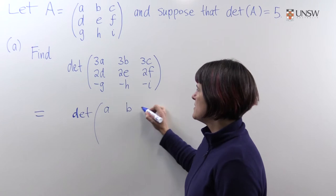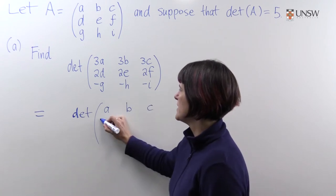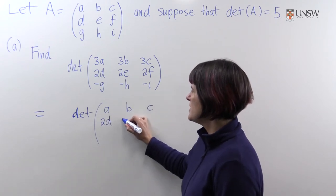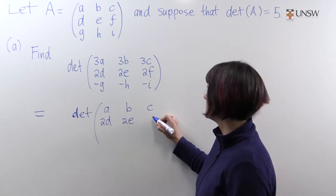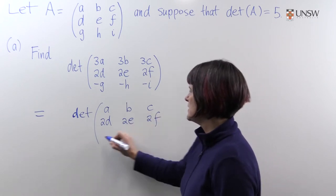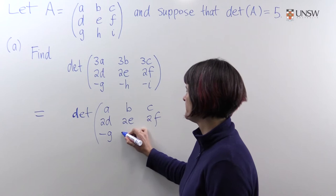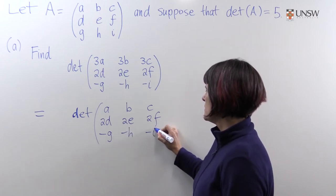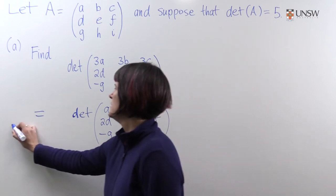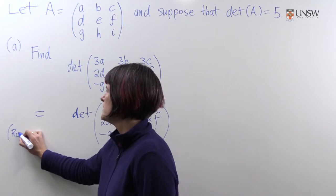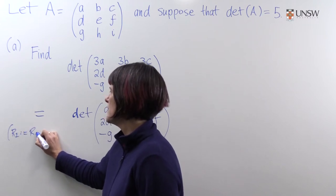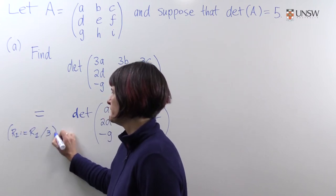So I'm going to just write down the matrix we would get after dividing the first row by three, and then we'll have to fix the determinant. So we obtain this. The operation that we've done here is row one becomes row one divided by three.